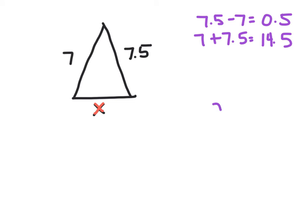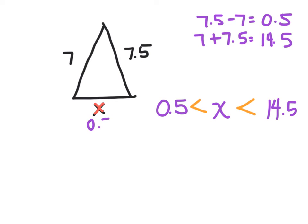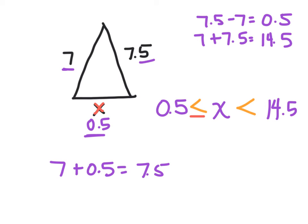So my X has to be between 0.5 and 14.5. X can be bigger than 0.5 but less than 14.5 — anything between those. It can't be exactly 0.5, because if I put 0.5 here and add the two smaller sides, 7 plus 0.5, that's 7.5 — that is not bigger than the third side. That's why it doesn't include 0.5. If it did, we would put an equal sign here, but it doesn't.